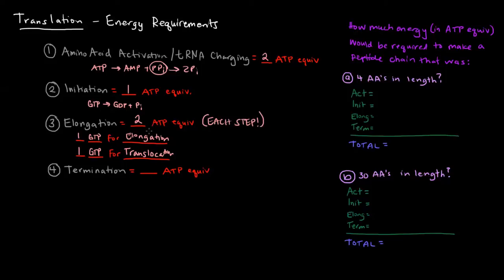So each time you add an amino acid, it costs two ATP equivalents. Termination required one ATP equivalent. A GTP was hydrolyzed off into a GDP and an inorganic phosphate.